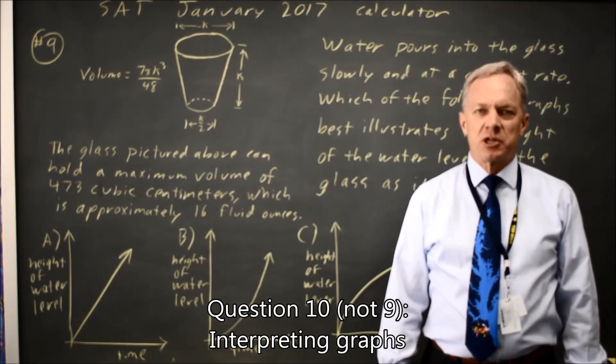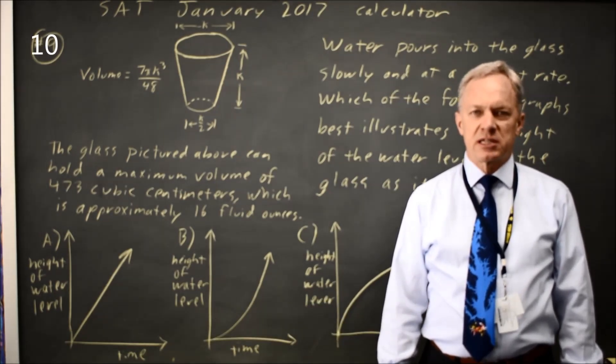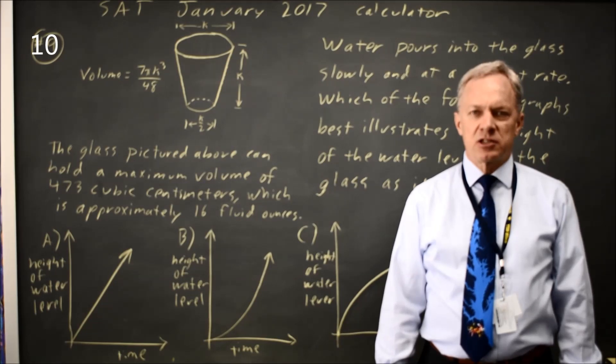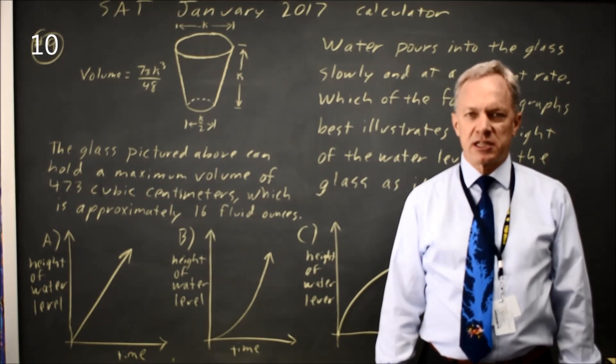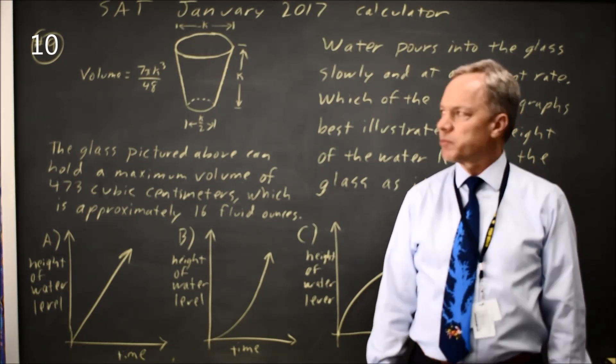This is calculator question number 9 from the January 2017 SAT. It's also practice test 8 from the 2018 version of the College Board Prep Book.